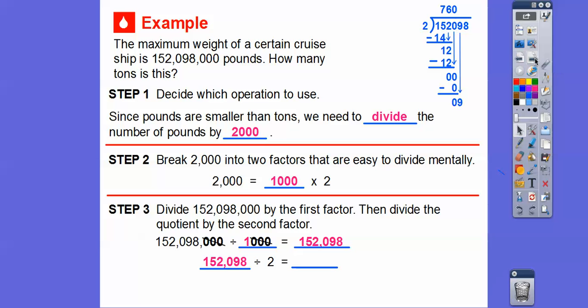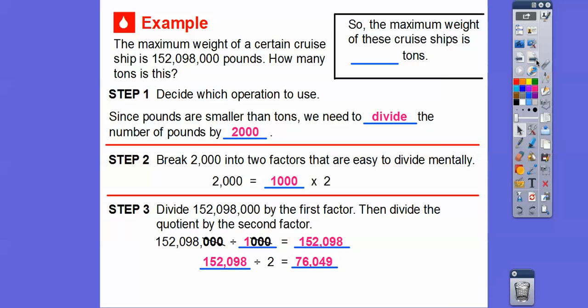And then, so bring down the next number, and 2 goes into 9 four times. And then bring down the next number, and 2 goes into 18 nine times right there. Finally, we end with the remainder of zero.